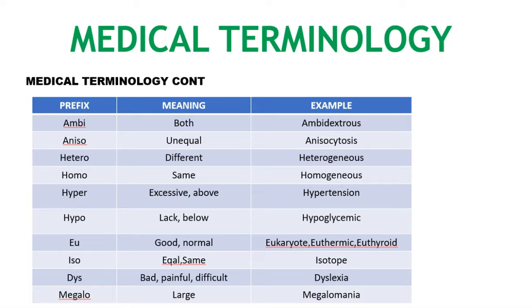Continuing the summary: EU means good or normal; iso means equal; dys means bad, painful, or difficult. Megalo or mega means large — for example, megalomania.